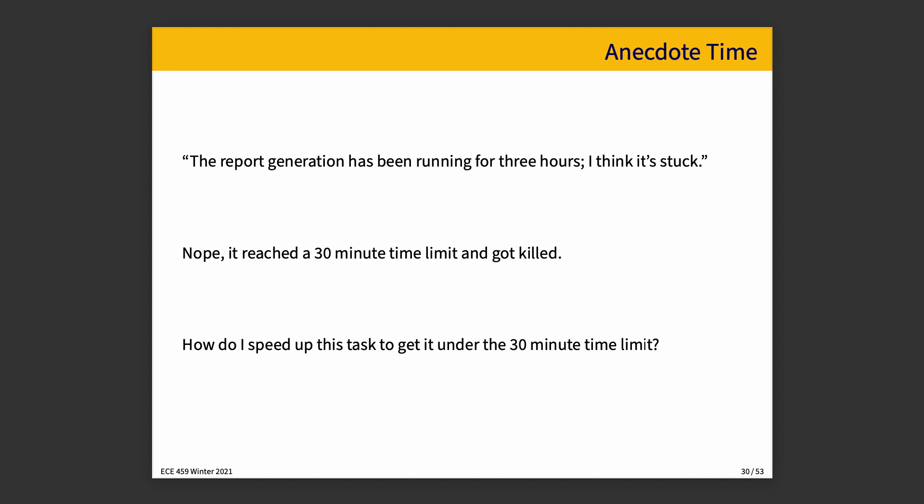Let me tell you a story about a different Excel report, related to warehouse inventory rather than customs declarations, but similar. A user opened a ticket saying the report appears to have been running for three hours — they thought it was stuck. The user's theory was understandable but not quite correct. The report had reached a 30-minute time limit set in the application server, which kills it when it's been running for 30 minutes — the goal being to prevent a runaway task from taking up excessive CPU resources. Simply disabling the 30-minute limit is not a winning strategy because it doesn't solve the underlying problem. The real question is: how do I speed up this task to get it under 30 minutes?